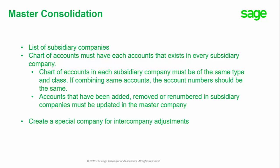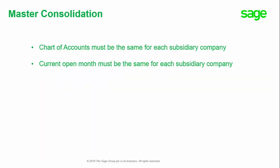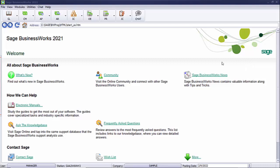If you need to handle intercompany adjustments and eliminations, we recommend you create a special company just for that purpose and include it as one of your subsidiaries of the master company. Basically, for your master company, the chart of accounts in each of your subsidiary companies must be the same. Also, the current open month must be the same in each of your subsidiary companies before you actually combine into your master company.